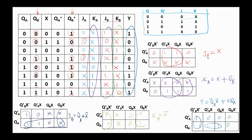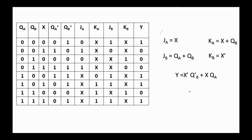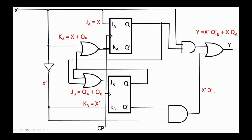Now we have the expressions for the flip-flop inputs and for the output Y. Here are the expressions again: JA equals X, KA equals X or QB, JB equals QA or not X, KB equals not X, and Y equals not X · not QB or X · QA. We can use them to obtain the circuit diagram. This is the sequential circuit designed using JK flip-flops: we apply to JA: X, to KA: X or QB, to JB: QA or QB, to KB: not X, and the expression for Y is not X · not QB or X · QA.